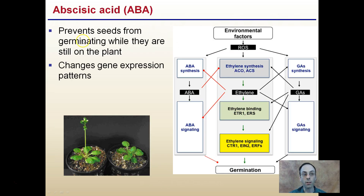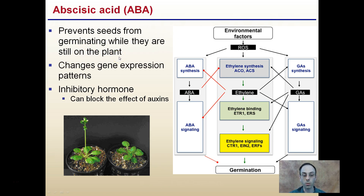In addition, abscisic acid prevents seeds from germinating while they're still on the plant. The plant doesn't want its seed to germinate before it falls, so it can grow and prosper on the ground. Abscisic acid is also involved in suppressing seeds from germinating even when off the plant. For example, apple seeds have a very high amount of abscisic acid, and it takes them years naturally to be able to germinate because of their high abscisic acid content.